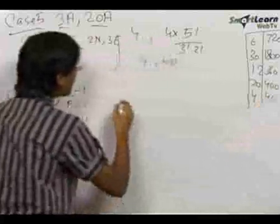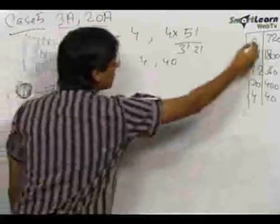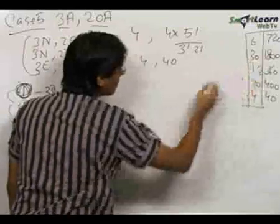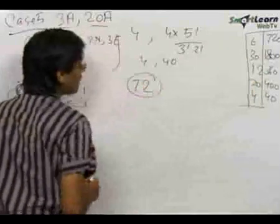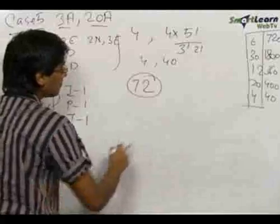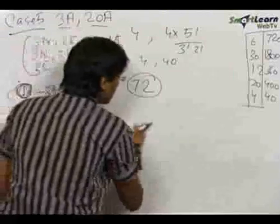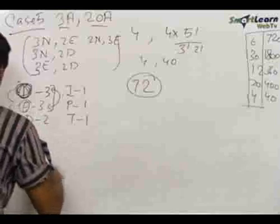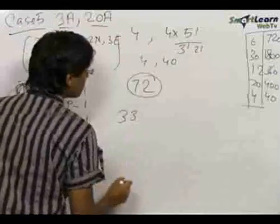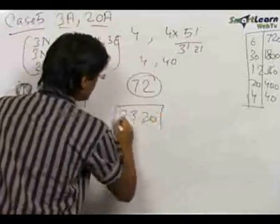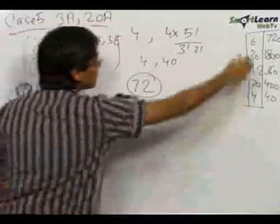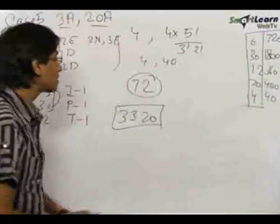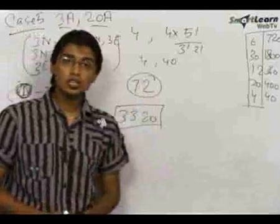The total number of ways of making selections is 6 + 30 + 12 + 20 + 4 = 72. The total number of ways of forming five-letter words is 720 + 1800 + 360 + 400 + 40 = 3320. Hence our final answers are 72 and 3320.